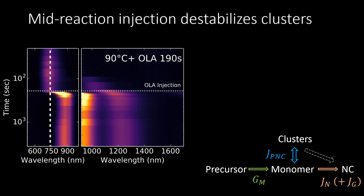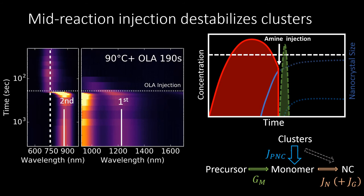Further, adding amine mid-reaction can be shown to immediately suppress the pre-nucleation cluster concentration and lead to rapid nucleation. In the example presented, amines were introduced once the first nucleation had already been initiated, leading to a second nucleation event and a bimodal size distribution. The suppression of the pre-nucleation cluster can thus induce fast nucleation, shifting the equilibrium to the monomer and reinstating classical nucleation and growth.